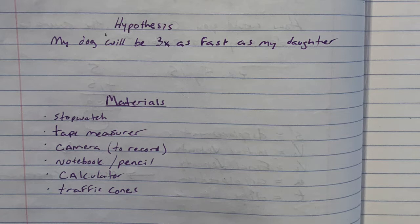For this experiment I used a stopwatch, a tape measure to measure out the distance, a camera to record this, a notebook and pencil to write down my data, a calculator to calculate the speeds, and traffic cones to mark the distances in my driveway.